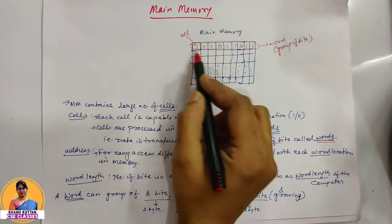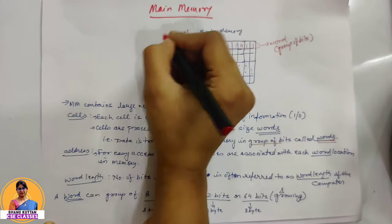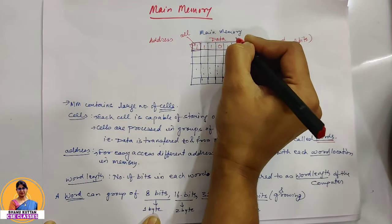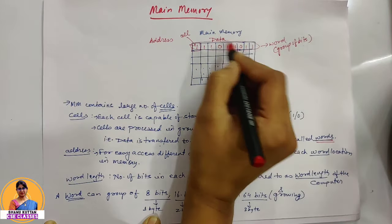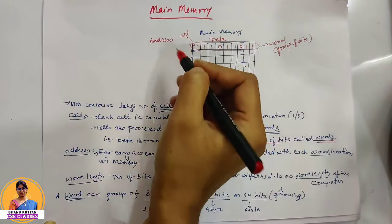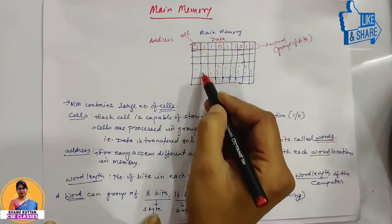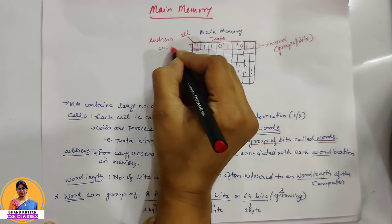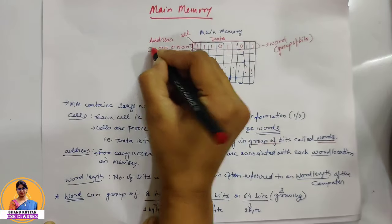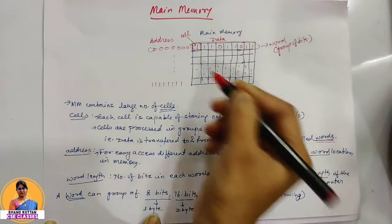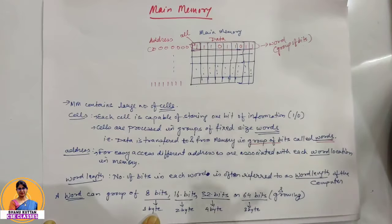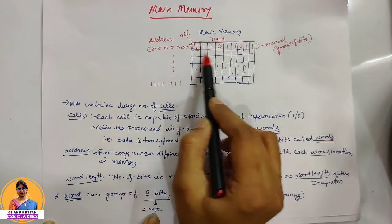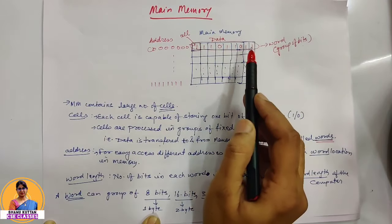We need addresses for each word. Data is stored in each word as values in the form of 1s and 0s, and we need to access them at different addresses. These addresses are in the form of bits. Based on the number of words, we decide the number of bits in the address. For example, addresses range from 0000 to 1111. In this way, we need to access and address every word. The main memory is organized so that we can store or retrieve one word — this is a basic operation.